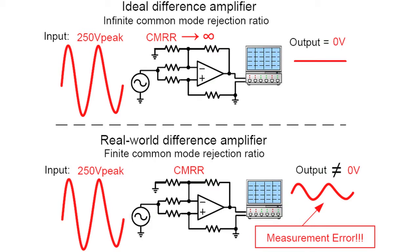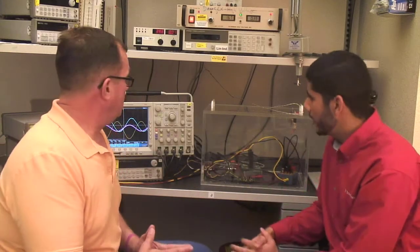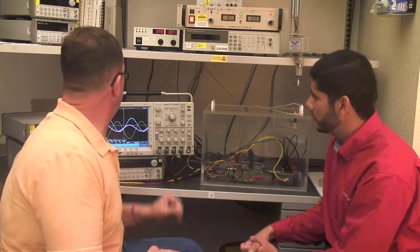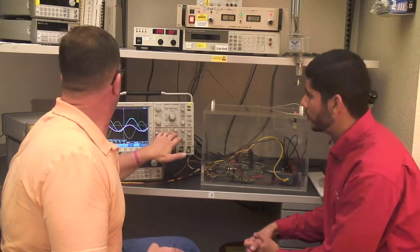So that output that we would see on a real amplifier in that case then would be an error in the measurement. Exactly. Anything we see on the output would be an error. Let's go ahead and start looking at some of the waveforms you have here on the oscilloscope.